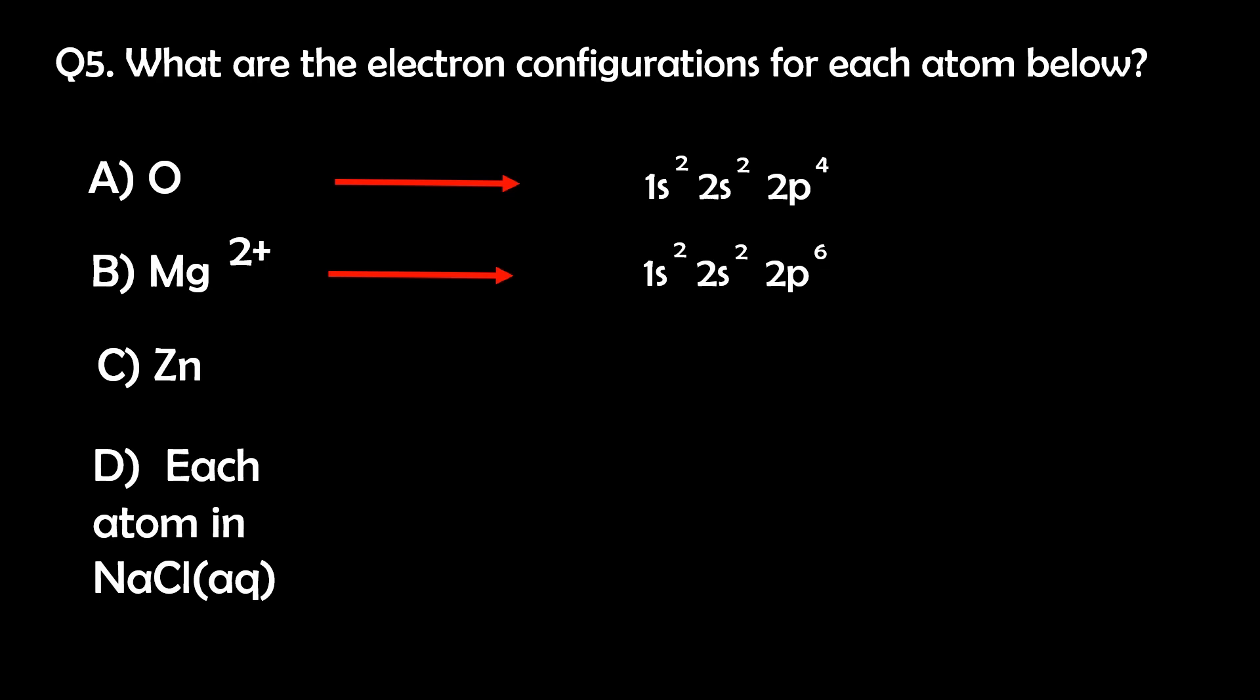For zinc, it's 1s2, 2s2, 2p6, 3s2, 3p6, 4s2, 3d10, or argon, 4s2, 3d10. Remember the Aufbau principle here.